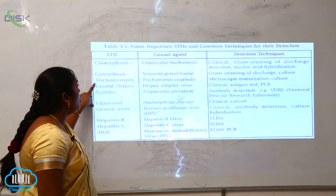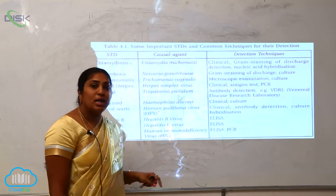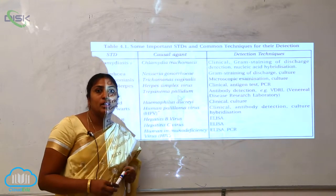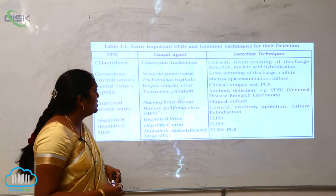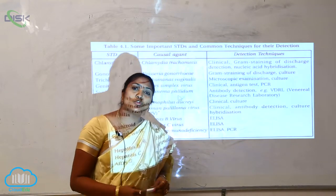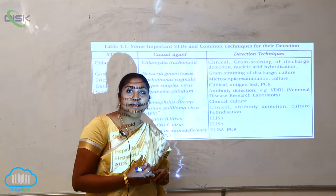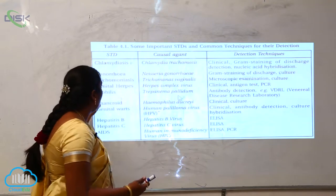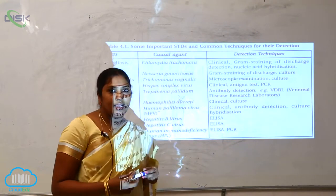Next is trichomoniasis, caused by Trichomonas vaginalis. It is mostly seen in the vagina of females, hence the name. The detection techniques are microscopic examination and culture, used to determine whether the female has trichomoniasis in the vagina.